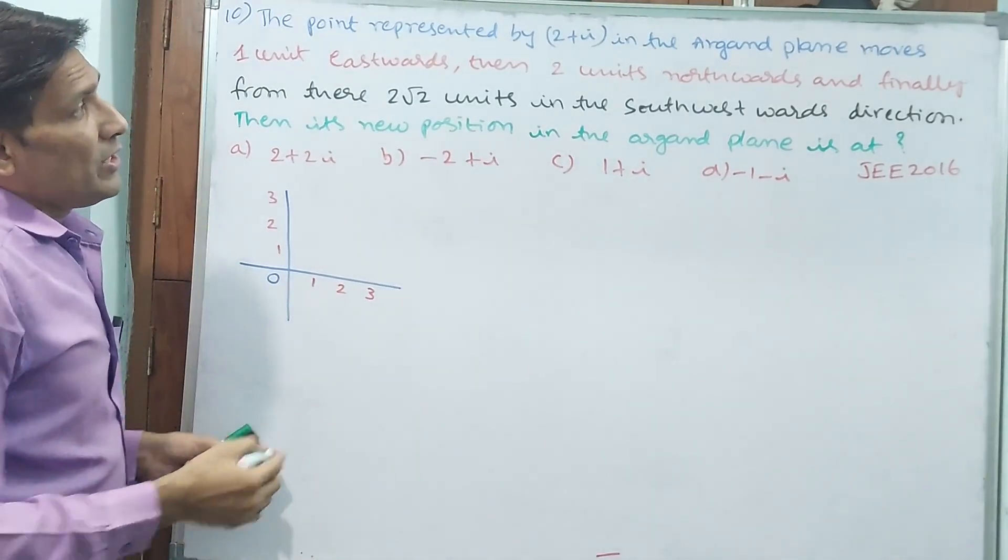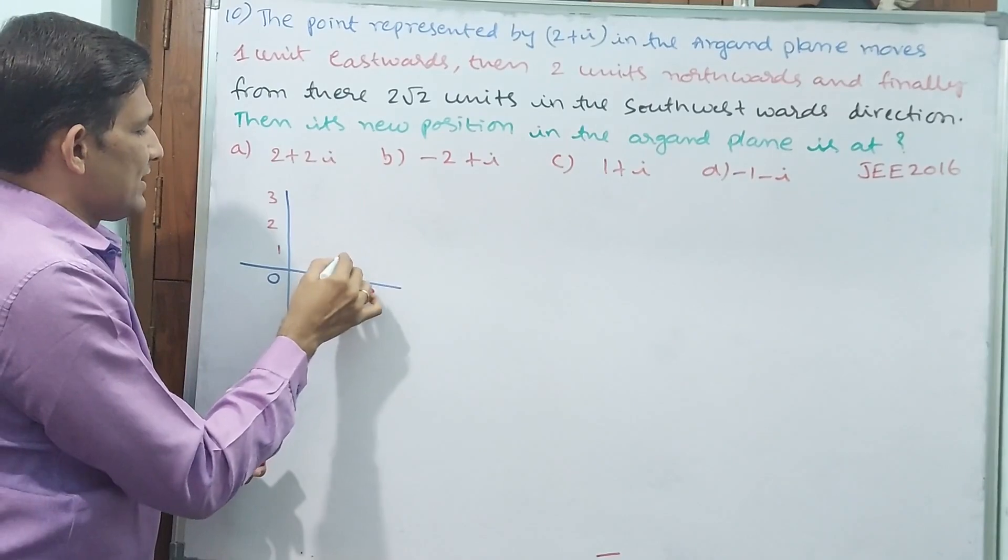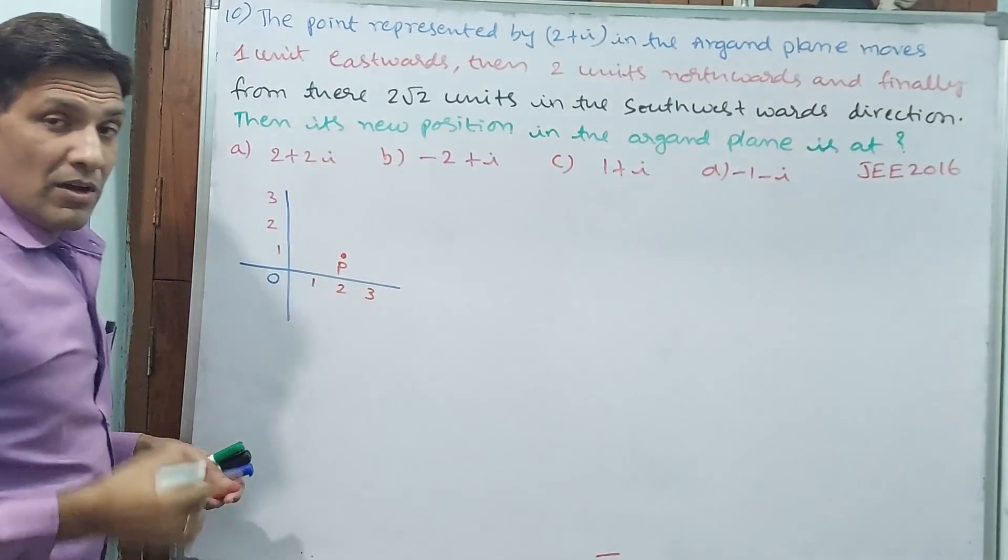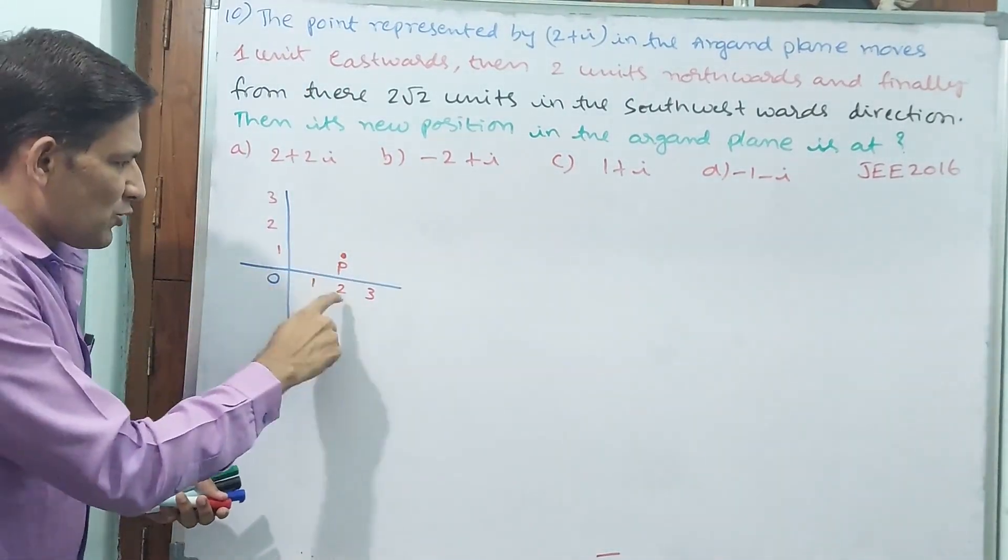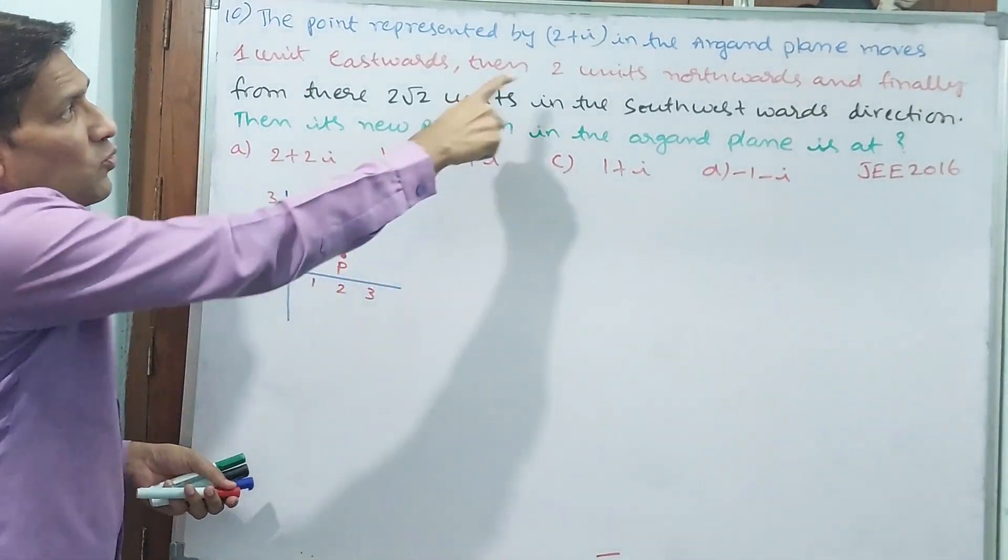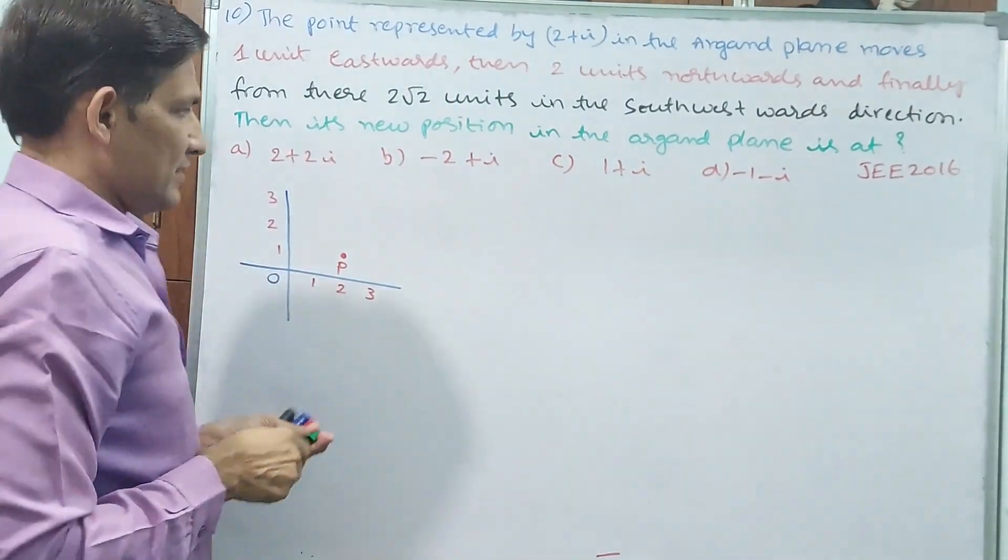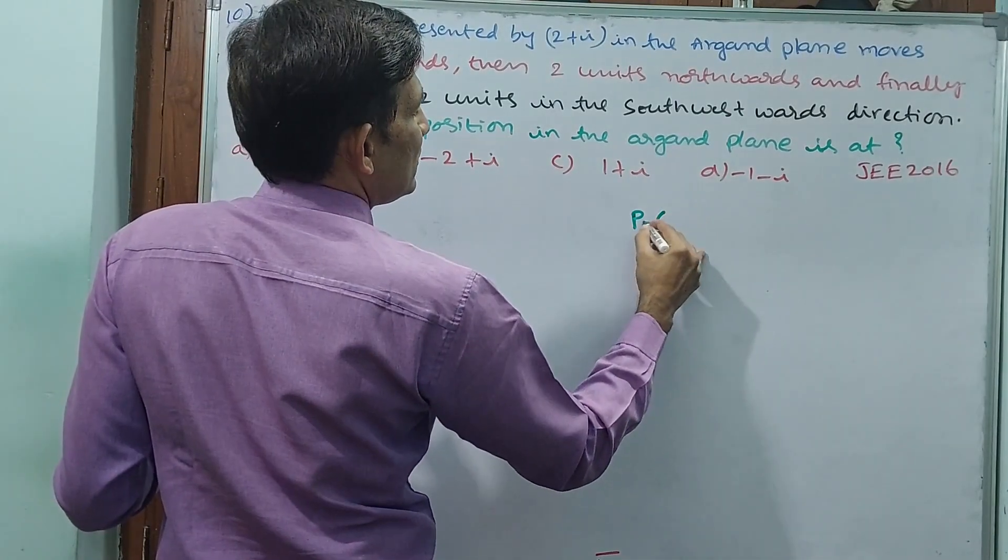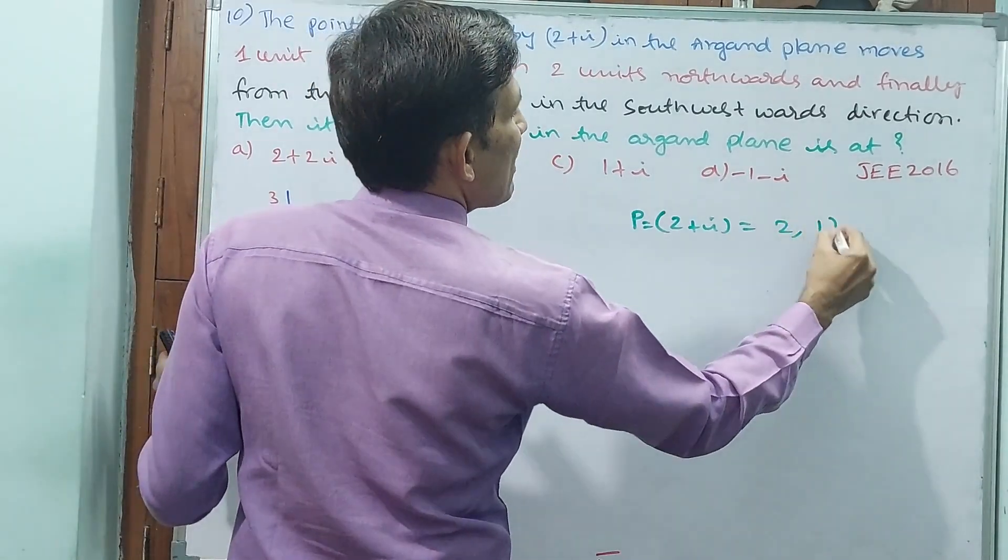Now you tell me, 2 in x-axis, 1 in y-axis. Shall I take this here? P, they have not given but I have taken this as P. Now P represents 2 and 1.